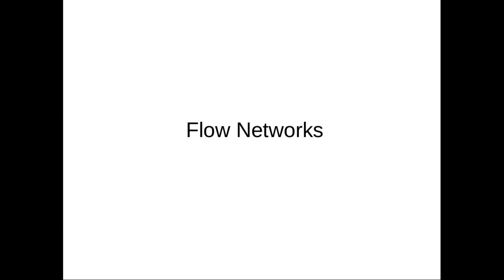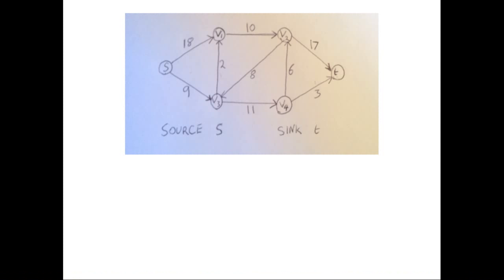So let's start off by looking at flow networks. Here I've drawn a basic flow network, and as you can see, it's just a directed graph. However, compared to a directed graph, within a flow network each edge must have a capacity and a flow. In this case, the graph just has the capacities for each edge.